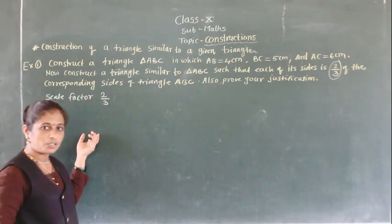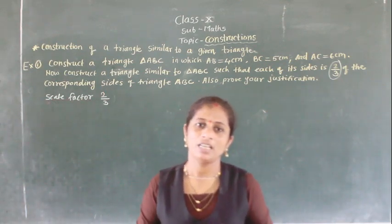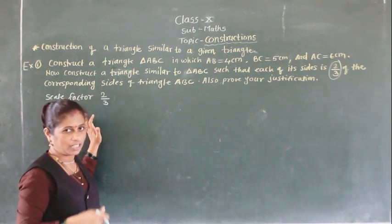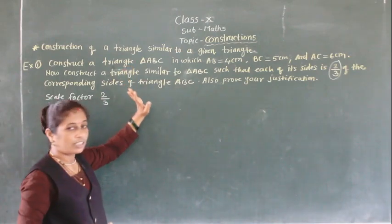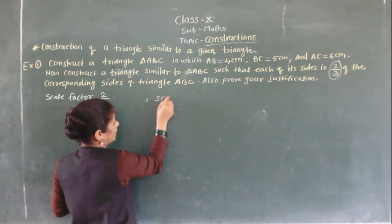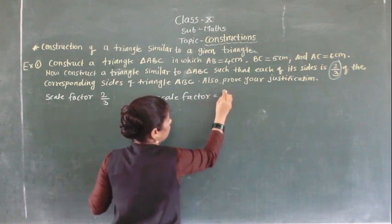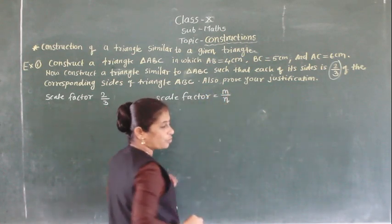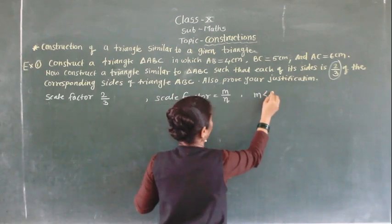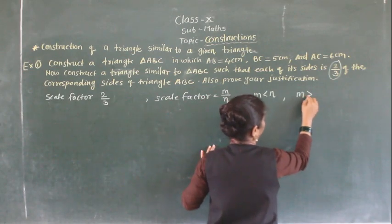The scale factor is 2/3. We can construct a triangle similar to the given triangle — it may be smaller or may be larger — and it depends on the scale factor. The two conditions of scale factor are given as M/N: when M is less than N, and when M is greater than N.